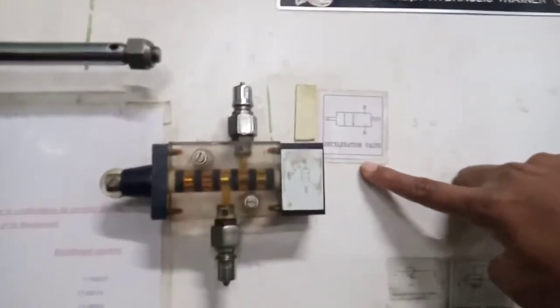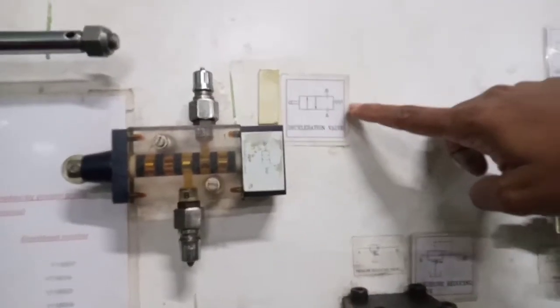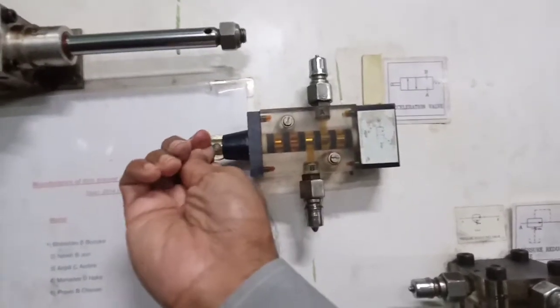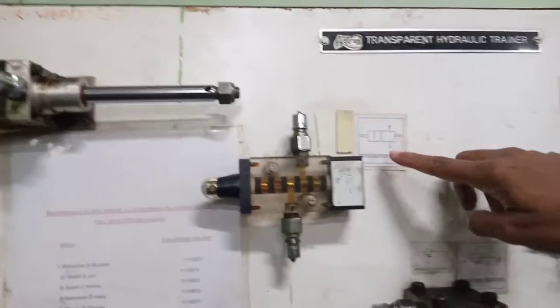concentrate here. This is a deceleration valve. Or as you can see in this symbol, it's lever operated. Not lever. It's roller operated. Two by two DC valve. See, two positions.